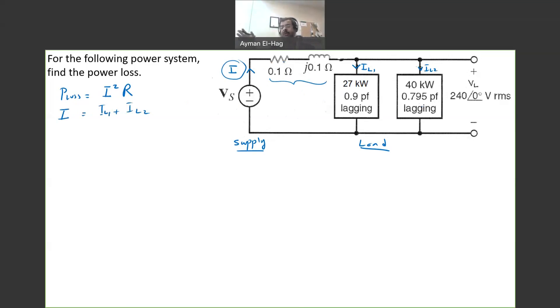And by the way, you can have more than two loads. You can have three, four loads, and the approach will be exactly the same. We want to find the load current in each load, and then find the total current that is supplied by the supply, which is basically the summation of all these individual currents. So, let's talk about load number one.